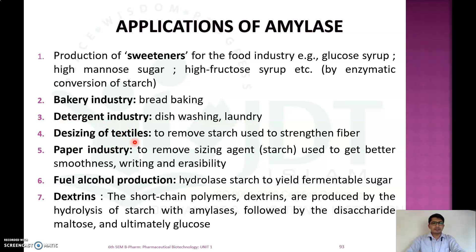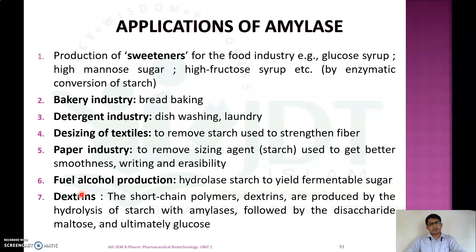Amylase is used in desizing of textiles, as starch is used as a sizing material to strengthen fibers, and amylase removes this starch. It is also used in the paper industry to remove sizing agents like starch to achieve better smoothness, writing, and erasibility. Additionally, it is used in fuel alcohol production by hydrolyzing starch into fermentable sugars, which are then converted to alcohol, and in the production of dextrin as short-chain polymers by hydrolysis of starch with alpha amylase.